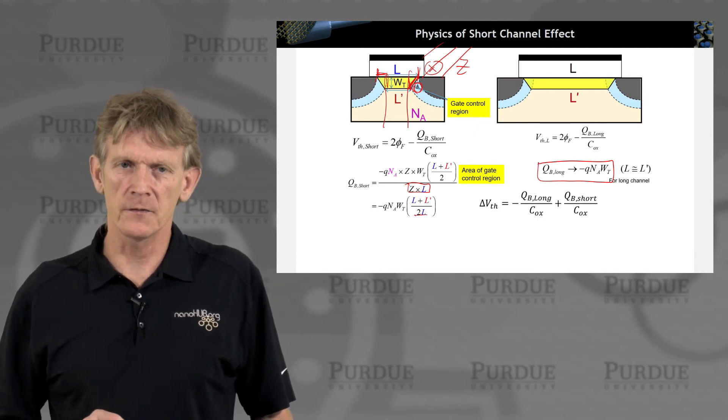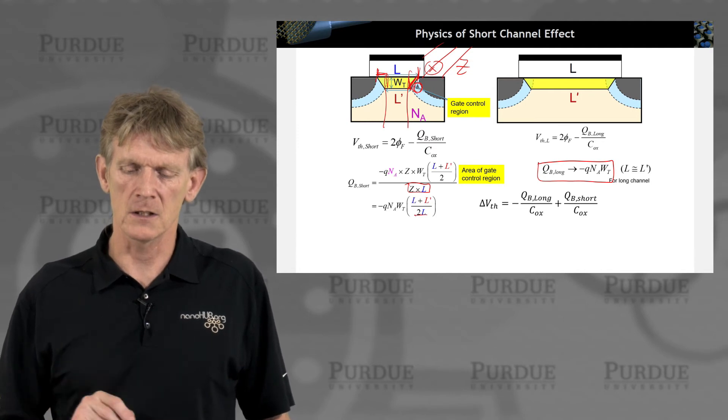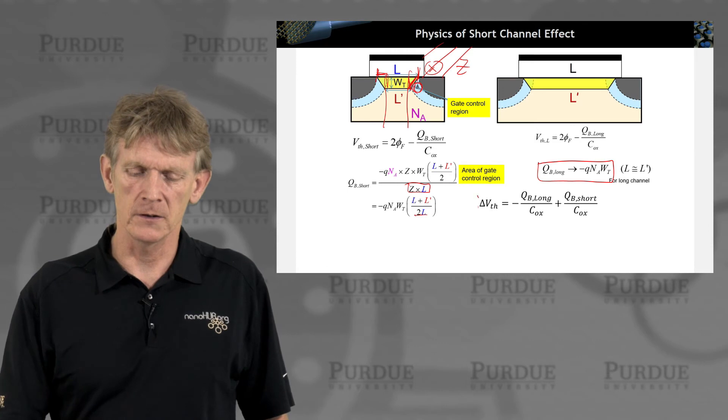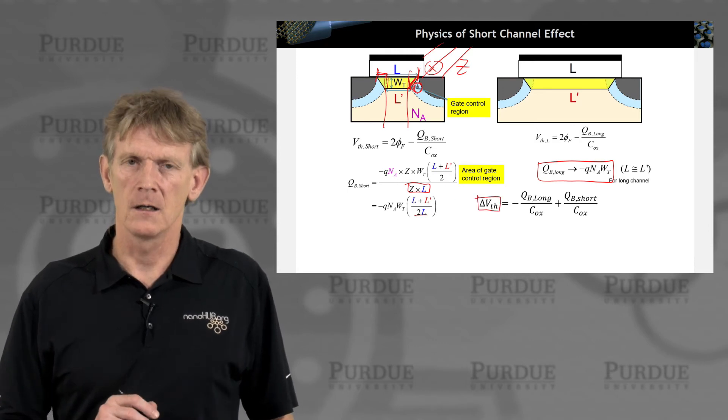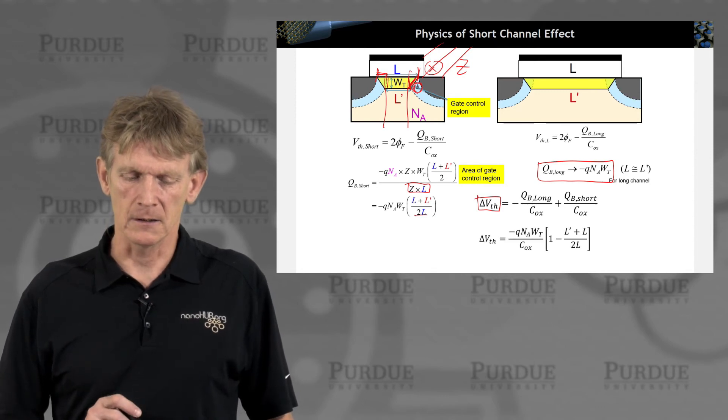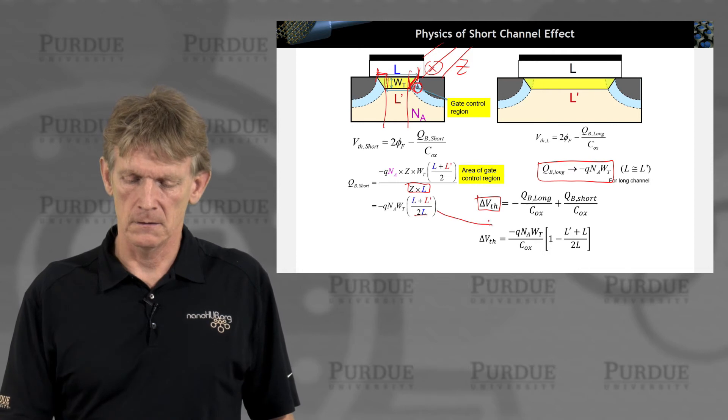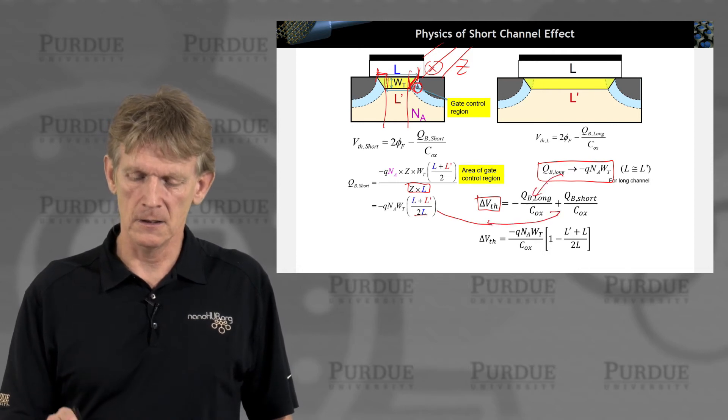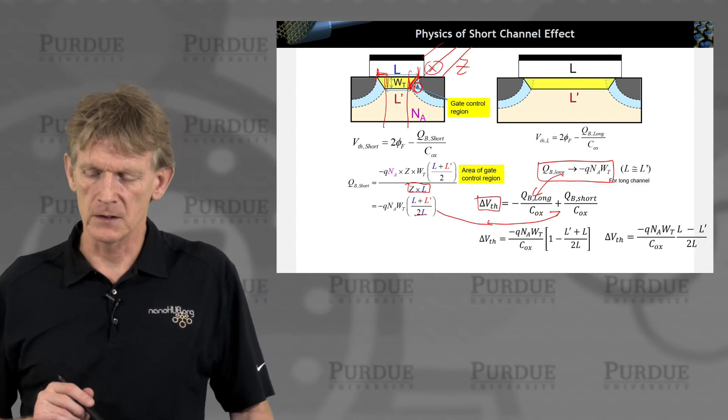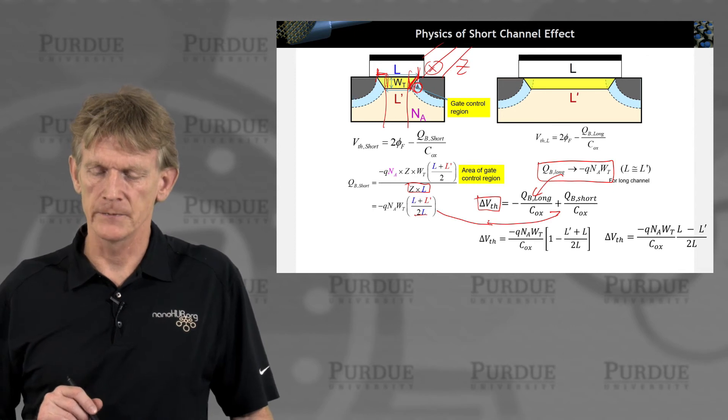If you calculate the difference in threshold voltage between the long channel device and the short channel device, you would calculate this. That's the difference in threshold voltage. We're just using these two expressions and plug it in here. It's just algebra. You resolve this for (L - L')/2L.